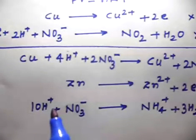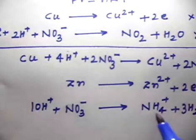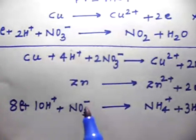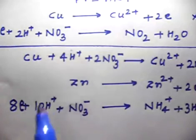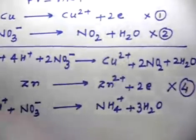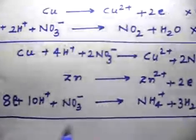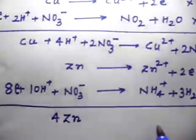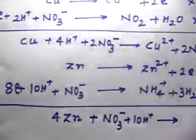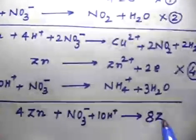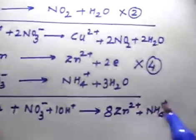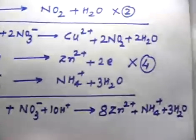Balancing the charges: I need 8 electrons on the left side of the NO3⁻/NH4⁺ half-reaction. Multiplying the Zn half-reaction by 4 and adding both, the balanced equation is: 4Zn + NO3⁻ + 10H⁺ → 4Zn²⁺ + NH4⁺ + 3H2O.